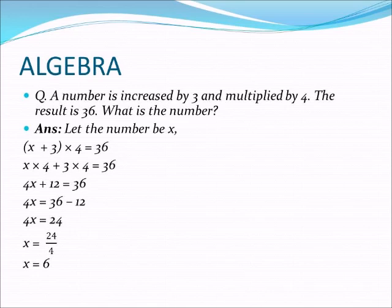Here, the non-x term is plus 12; when it goes to the opposite side, it becomes minus 12. So we get 4x equal to 36 minus 12. 36 minus 12 is 24, hence 4x equal to 24. Next, the coefficient of x is 4; when it goes to the right side, it becomes divided by 4. So x equals 24 by 4, which is 6. The unknown number is 6. We verify: (6 plus 3) into 4 is equal to 36. Using the algebraic equation, we have found the unknown value x.